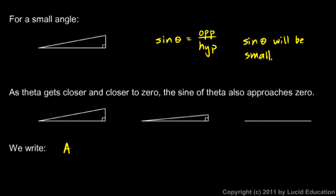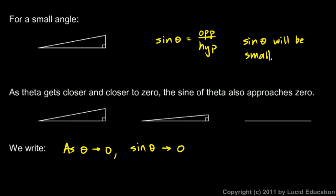So we can write this: as theta approaches zero — you imagine this angle getting smaller and smaller — the sine of theta approaches zero. This little arrow is standard mathematical notation indicating that the variable is getting closer and closer to a value. So as theta approaches zero, the sine of theta approaches zero. That should make sense if you understand that the sine of an angle is the opposite side over the hypotenuse. And if theta goes all the way to zero, the opposite side disappears, and we can say the sine of zero degrees is equal to zero.